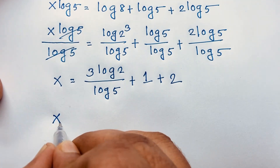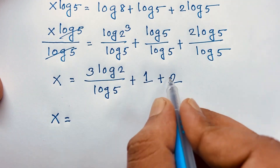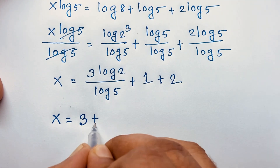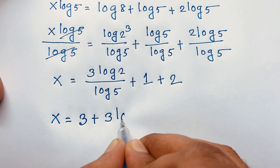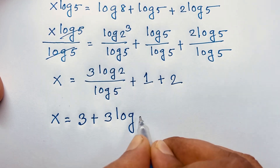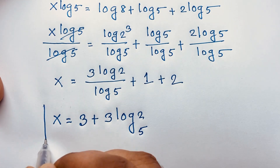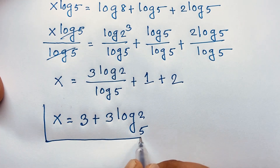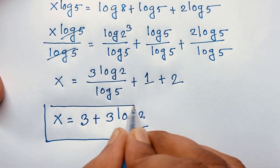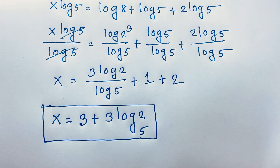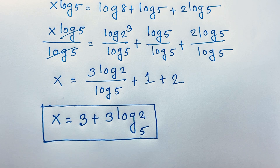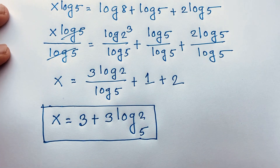So x equals 1 plus 2 plus 3 log 2 base 5, which gives x equals 3 plus 3 log 2 base 5. This is the value of x in this math Olympiad question. This is our final solution in this exponential expression.